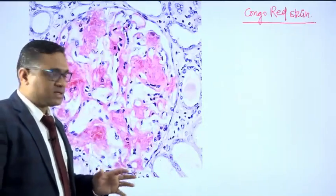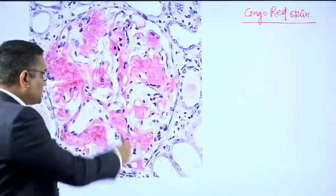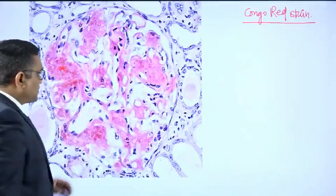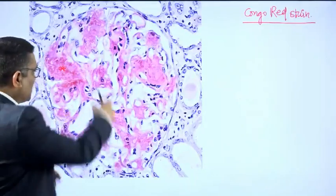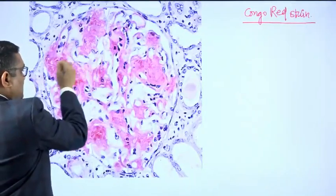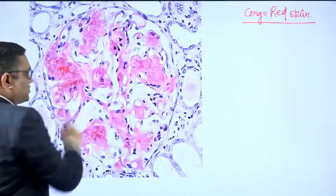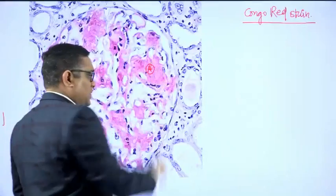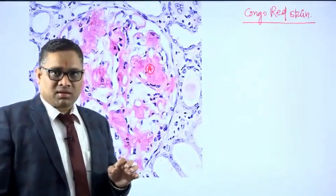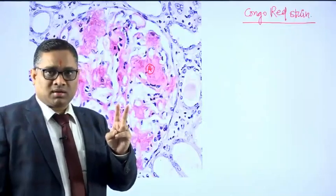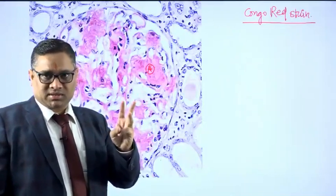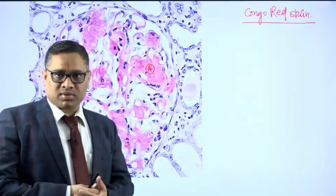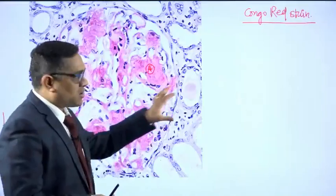In this Congo red staining, what we are seeing — all these pink color structures, marked with asterisks — are outside the capillaries, and these are the areas where amyloid deposition is there. So this is the amyloid: extracellular, acellular, and pink or eosinophilic structure. That is the description of amyloid on H&E staining also, and now we are looking at the Congo red staining.